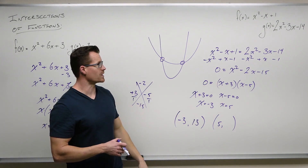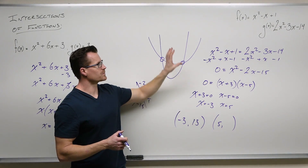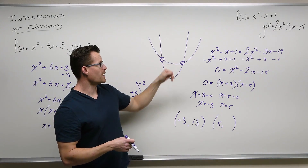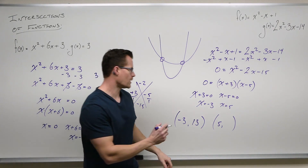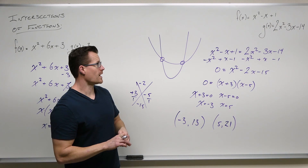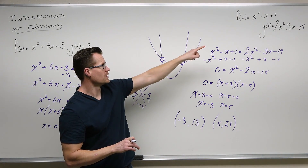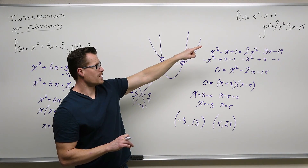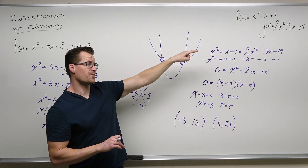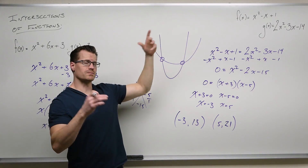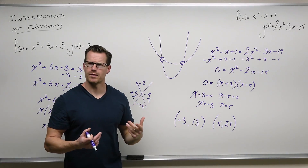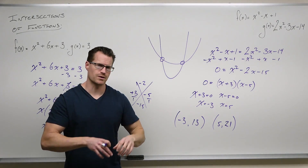Now the 5 — same idea. Take 5 and plug it into both f of x and g of x as a check. So 5 squared is 25, minus 5 is 20, plus 1 is 21. That should be my output in both functions. 5 into g of x: 5 squared is 25, 25 times 2 is 50, 50 minus 15 is 35, and 35 minus 14 is 21. So 5 evaluated in both functions gives us the same output — that verifies it's a point of intersection.